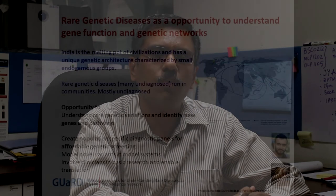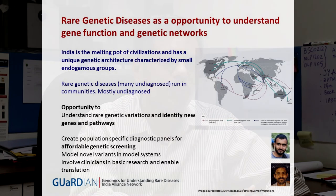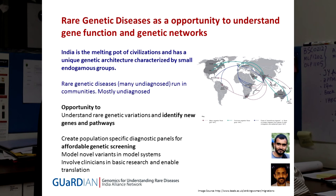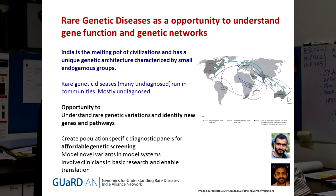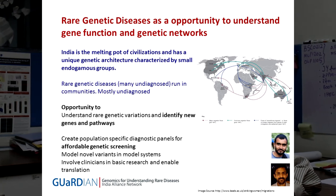This led to the formulation of a project called GUARDIAN — Genomics for Understanding Rare Diseases India Alliance Network. We started this for two reasons: we were pushed by this individual to study his family, and we realized that India is a melting pot of civilizations with unique genetic architecture characterized by small endogamous groups. This provides an excellent opportunity to understand rare genetic diseases, find new genes, new variations and pathways, and develop affordable genetic screens.